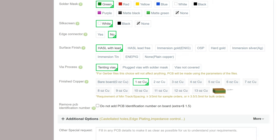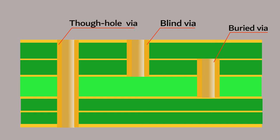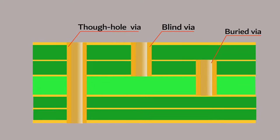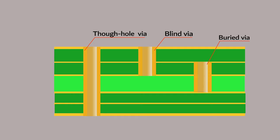How to choose the via in my design? Unlike through-hole vias, blind and buried vias are only available on boards with at least four layers. The use of blind or buried hole is an effective way to increase the density of multi-layer boards and reduce the number of layers and board dimensions.